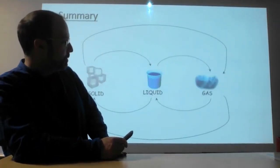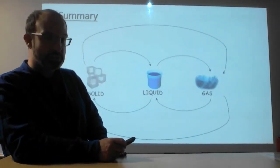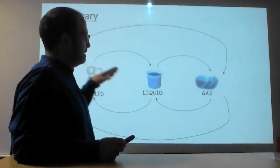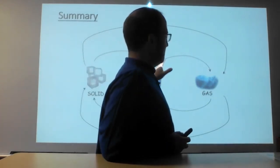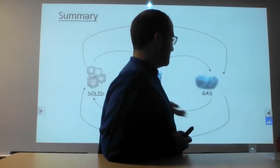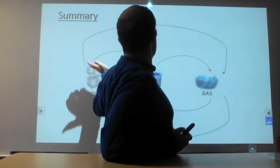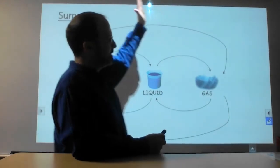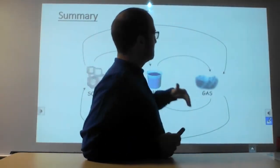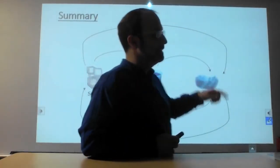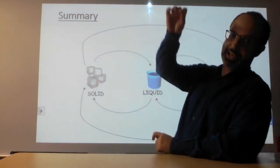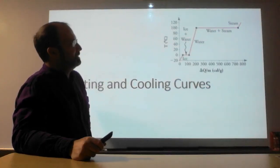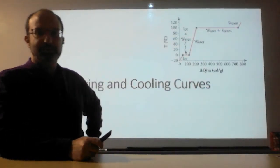So there's the summary. We've got multiple different transitions: melting and freezing, vaporization or boiling, and condensation. Then there's also sublimation — solid to gas — and deposition going the other way, gas to solid, because the gas deposits on the solid. With that, I think we'll cut it here, and I will see you guys next time.